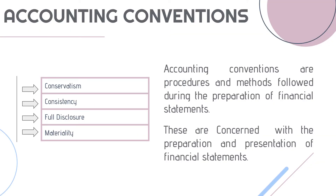After discussing accounting concepts, let's understand accounting conventions. These are procedures and methods which are followed while preparing the financial statement, and they are concerned with preparation and presentation of financial statements. We have four conventions: conservatism, consistency, full disclosure, and materiality.